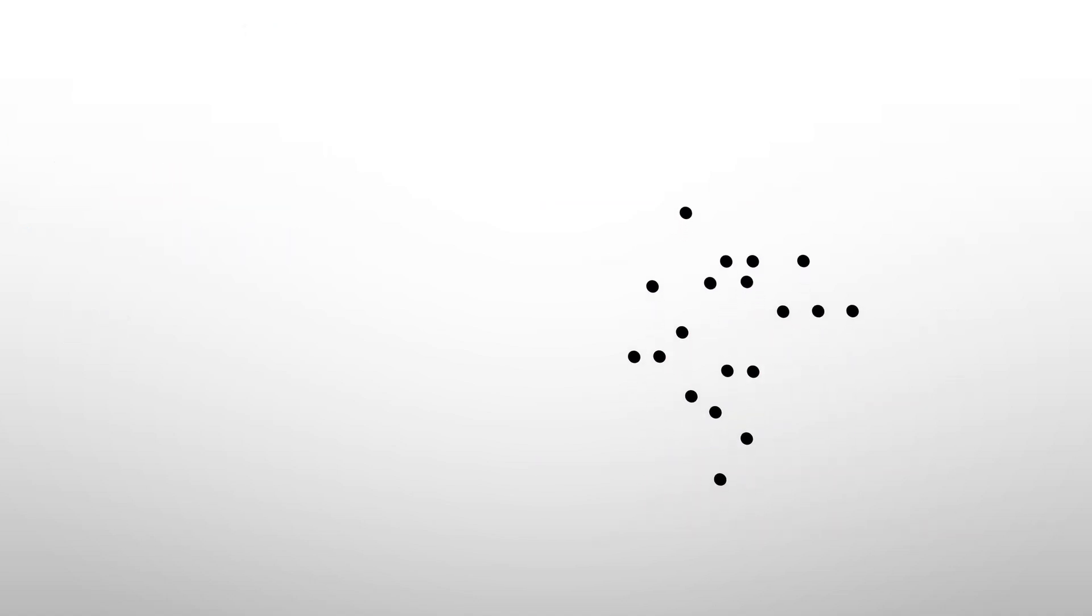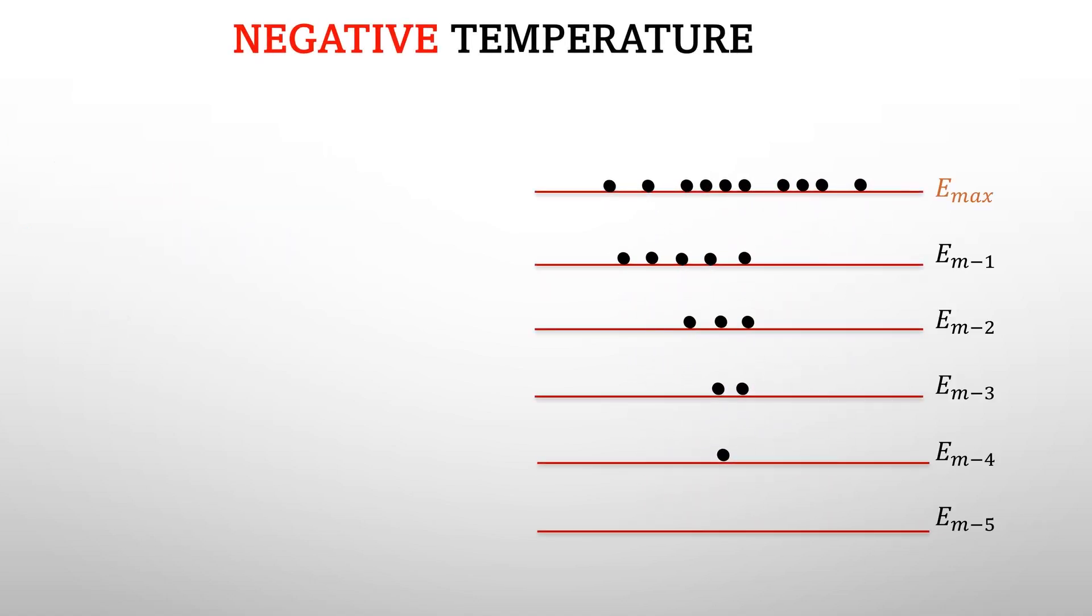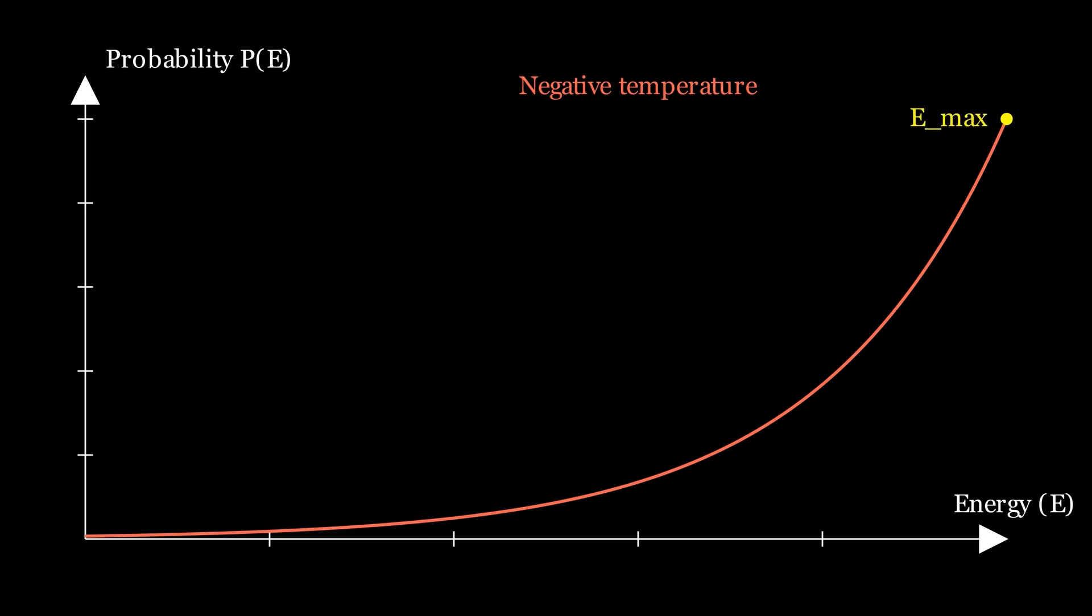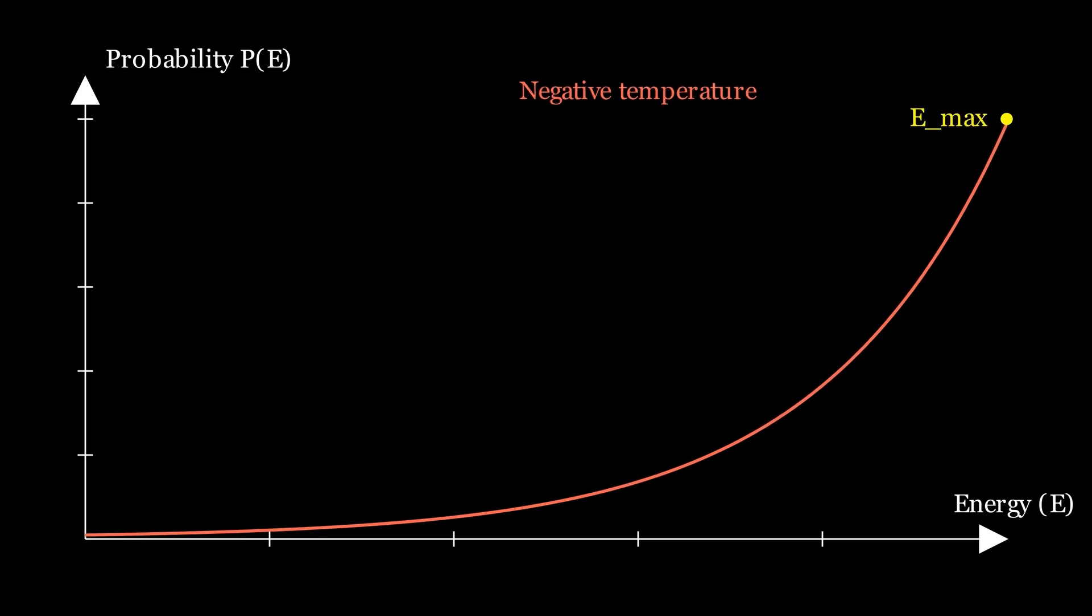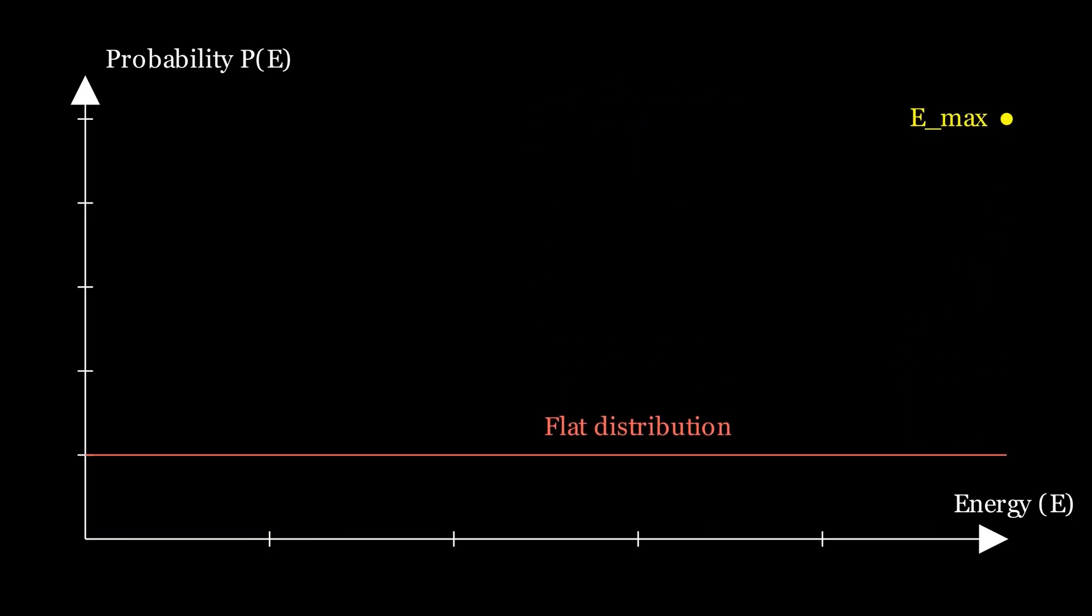Negative temperature now means that this distribution is inverted or flipped around so that you find more atoms in a higher energy state than in a lower one. This means that the peak in the distribution is not at the lowest energy anymore, but at the highest possible energy and the distribution is flat when negative temperature is minus infinity, which means all states are equally probable.